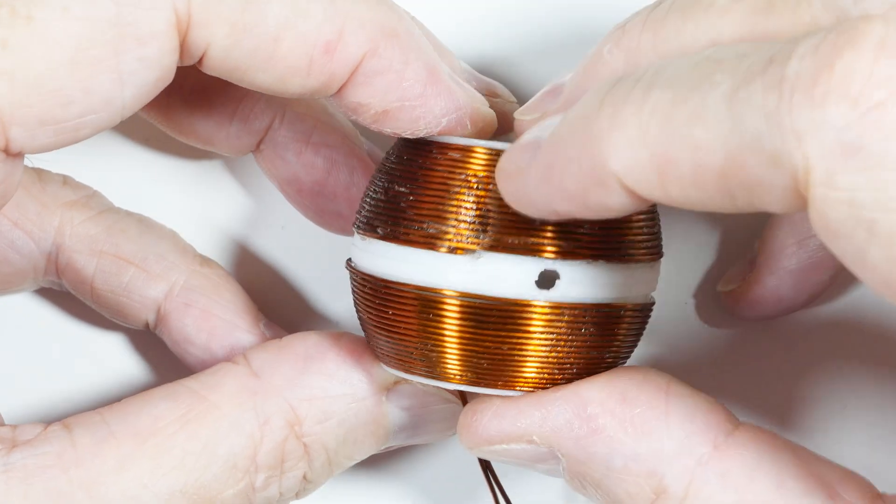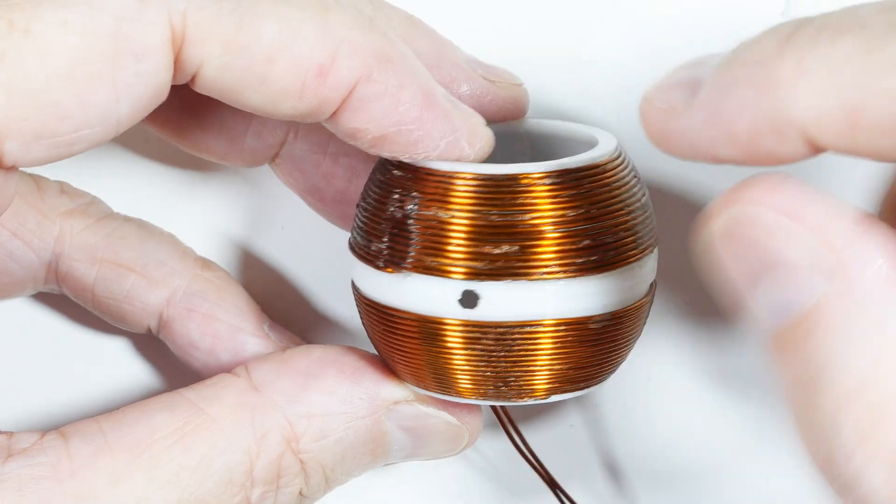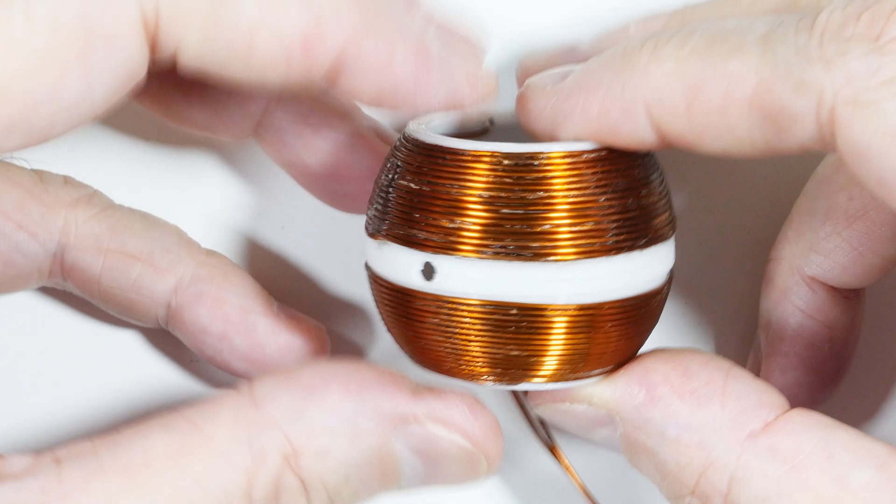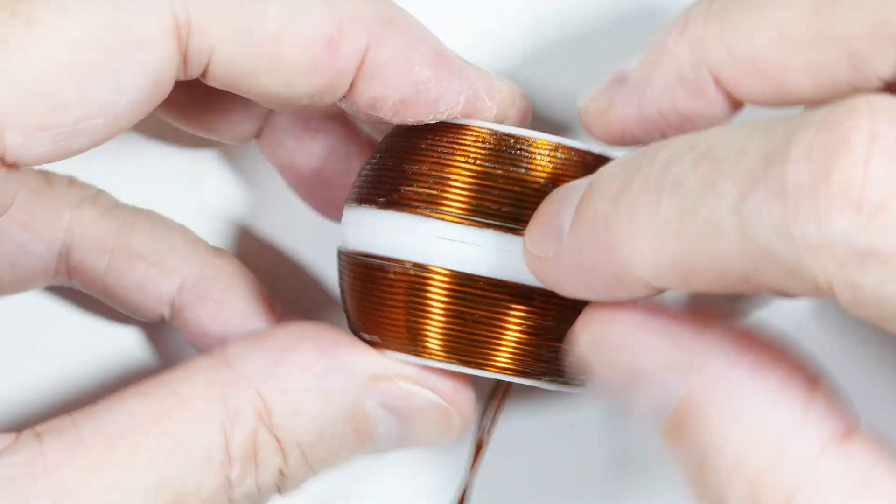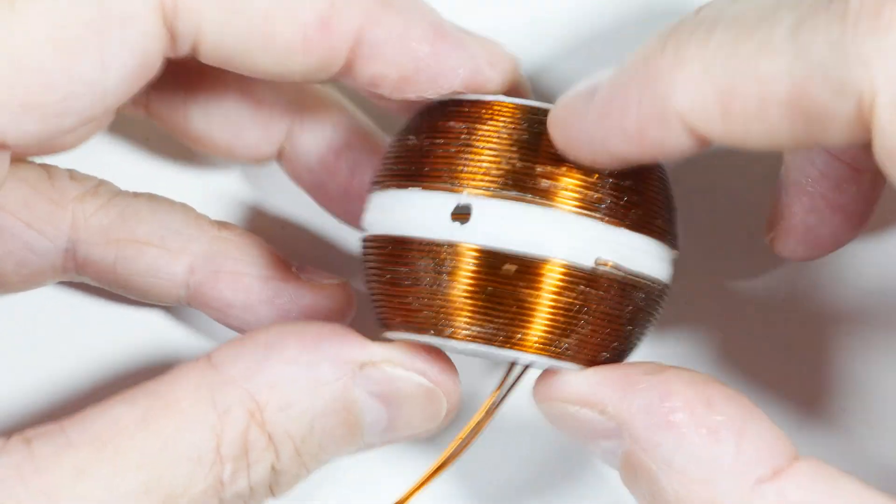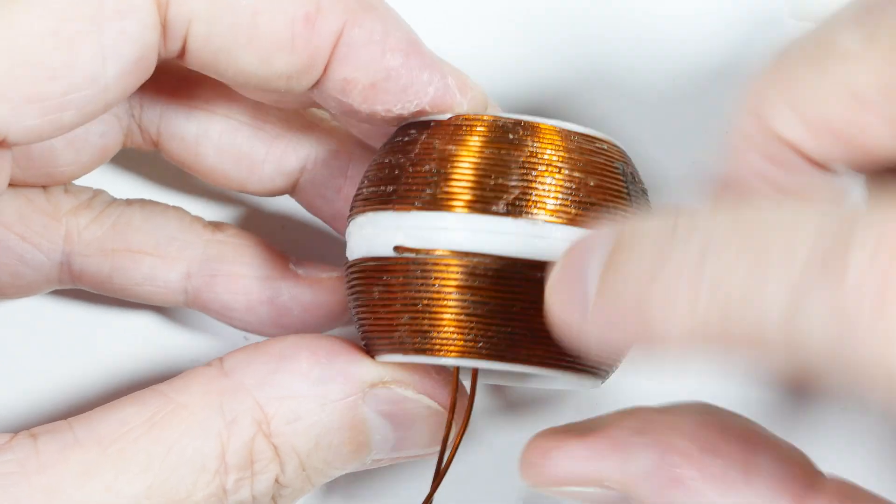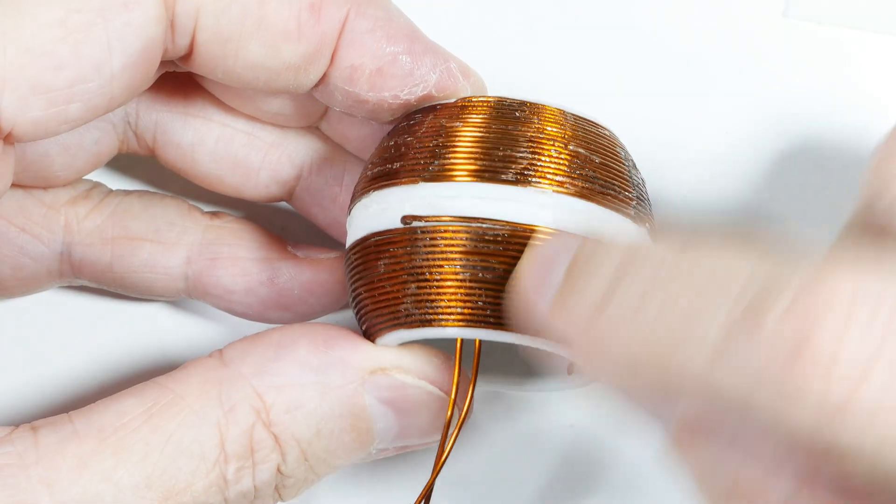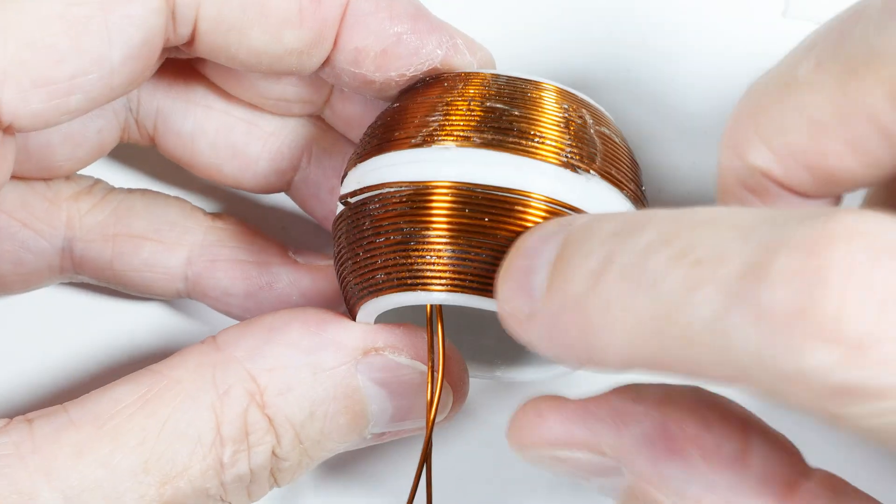When I got done, I basically just put stripe after stripe of super glue along here in order to bind the windings together and to the core.